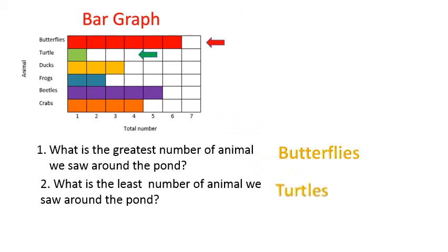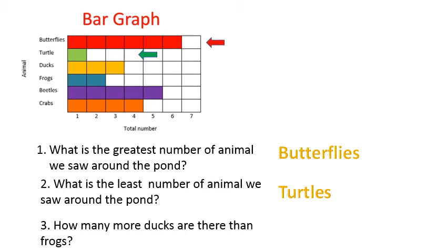How many more ducks are there than frogs? 3 minus 2 equals 1. Yes, there is one more duck than the frogs.